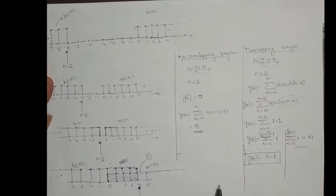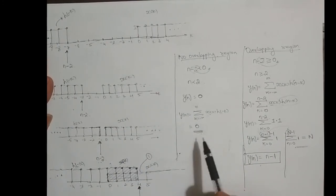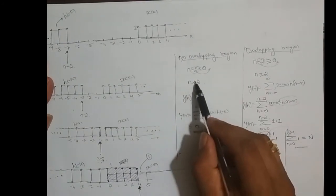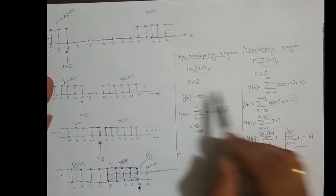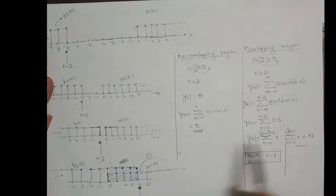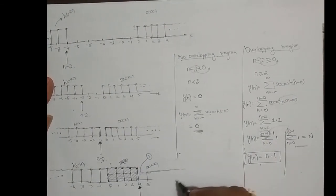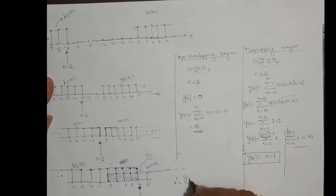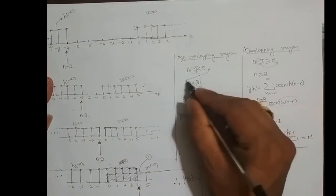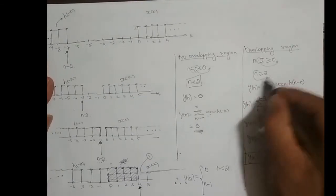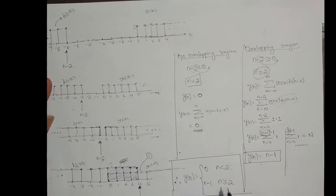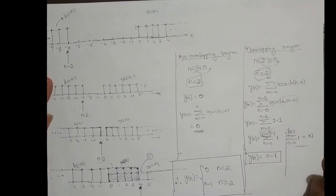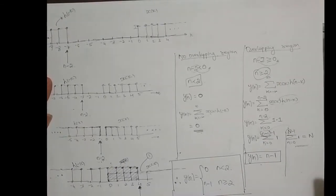Combining both regions after moving the slider from minus infinity to plus infinity: for the non-overlapping region n is less than 2 (from minus infinity to 1) y[n] equals 0, and for the overlapping region n greater than or equal to 2, y[n] equals n minus 1. This is the complete output from the LTI system for input x[n] = u[n] and h[n] = u[n minus 2]. The problem looks lengthy but with practice you will get used to it.